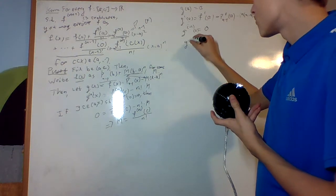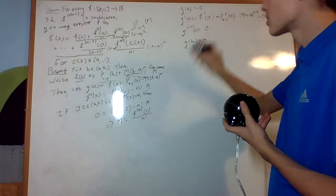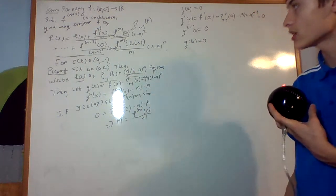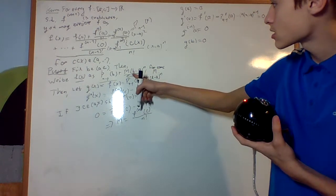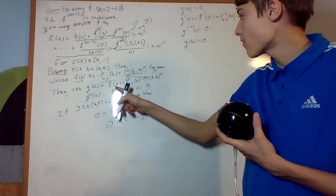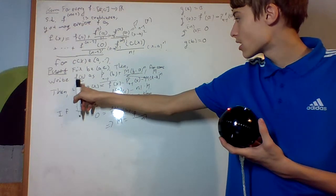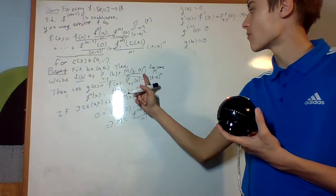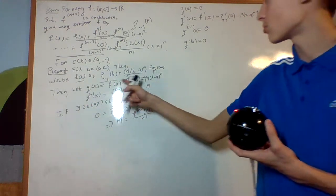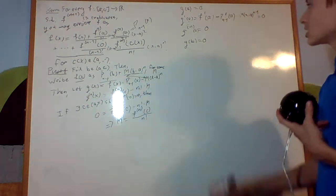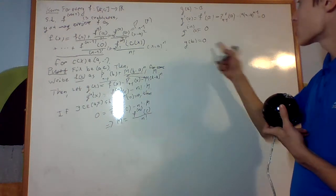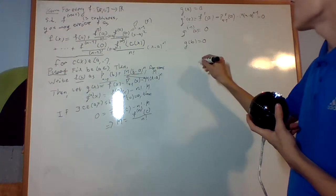And if you look at g of b, it's obviously going to be 0 by definition, right? Because if I look at this, then I look at that, that's going to be f of b minus f of b, right? Because that right there is f of b, and that's what we have right there if we plug in b. So g of b is going to be 0, and this is all we're going to need. Because now,